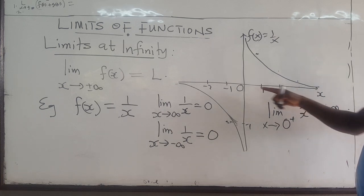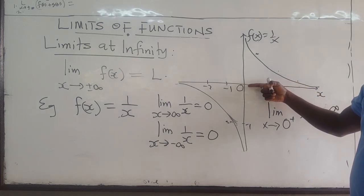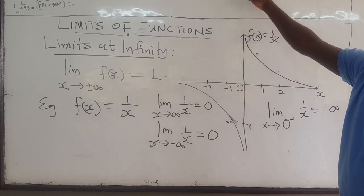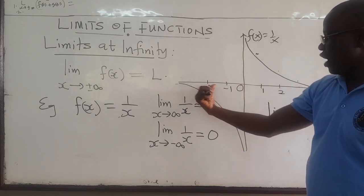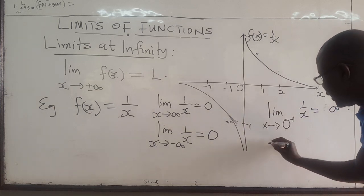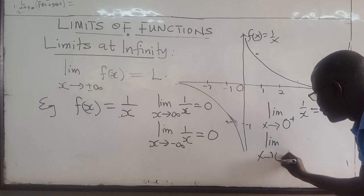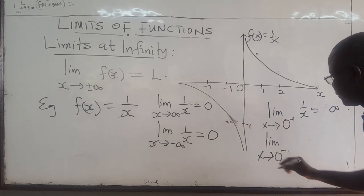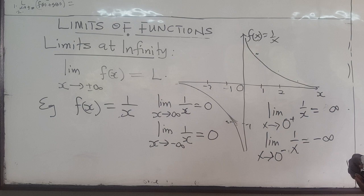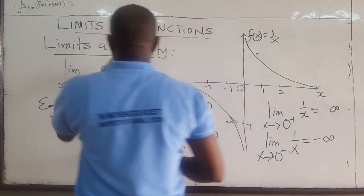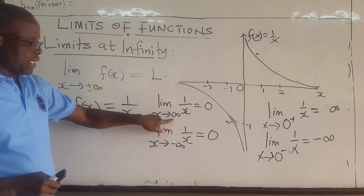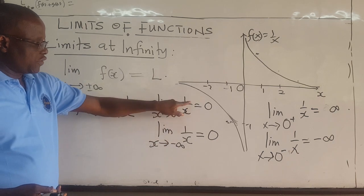So as x approaches 0 from the positive side, the right-hand side, this function is becoming larger and larger in the positive direction. On the other hand, as you approach 0 from the left side, the function is getting larger, but in the negative direction. So the limit as x approaches 0 from the left-hand side of 1 over x is equal to negative infinity. So when we say limits at infinity, we're usually looking at what happens as the independent variable approaches either positive infinity or negative infinity of some function.